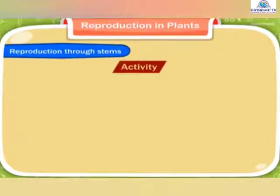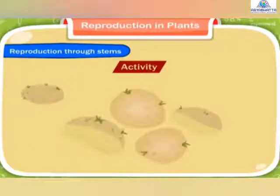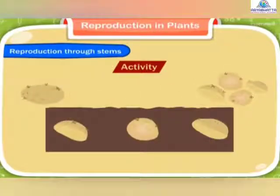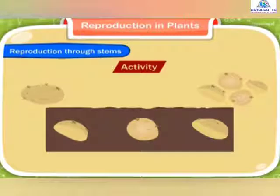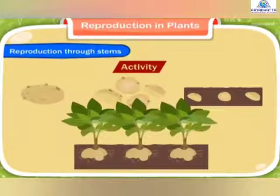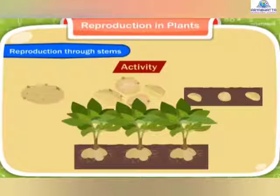Activity: Take a big potato. Cut it into several parts in such a way that each part has a bud. Plant these potato parts in moist soil. These potato parts will grow into new potato plants.